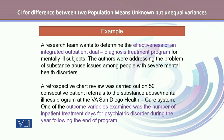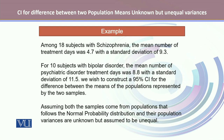Let's take an example. A research team wants to determine the effectiveness of an integrated outpatient dual diagnosis treatment program for mentally ill subjects. The authors were addressing the problem of substance abuse issues among people with severe mental health disorders. A retrospective chart review was carried out on 50 consecutive patients at the substance abuse mental illness program at VA San Diego Health Care System. One of the outcome variables examined was the number of inpatient treatment days for psychiatric disorder during the year following the end of the program. The first group was 18 subjects with schizophrenia with a mean number of days of 4.7 and a standard deviation of 9.3 days.